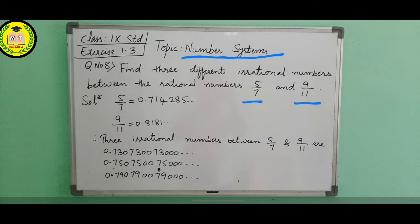The decimal expansion of 5 by 7 is 0.714285 and the decimal expansion of 9 by 11 is 0.8181, it is repeatedly coming 818181. So between these two numbers we need to write any numbers of our choice that should be irrational.